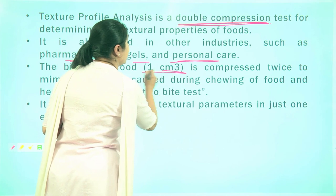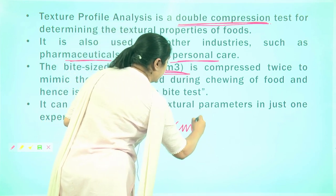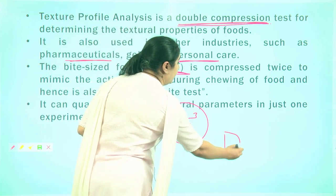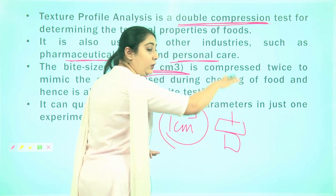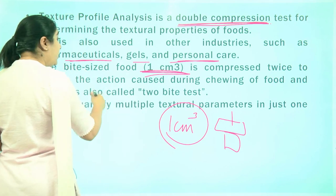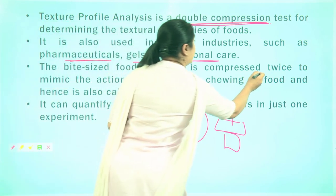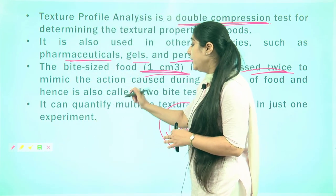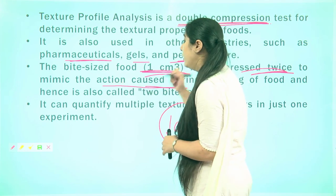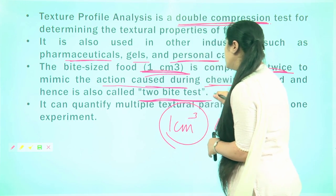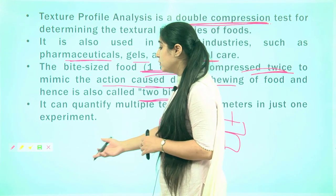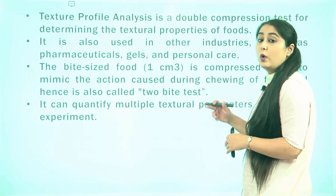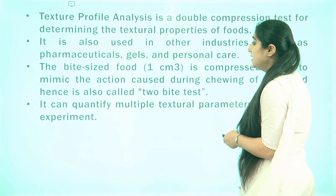A bite-sized food material — generally around one centimeter cube — is placed in the equipment and compressed twice. The motive of compressing the food material twice is to mimic the chewing action of the teeth. It is also called a 2-bite test, and the main advantage is that it can quantify multiple textural parameters in just one experiment.